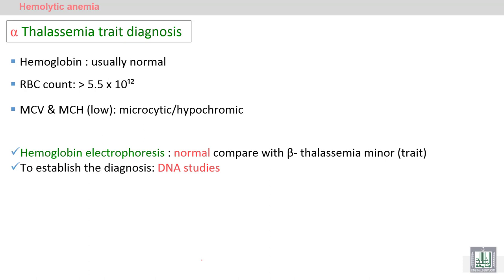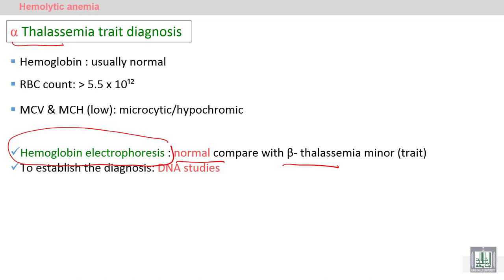For alpha thalassemia trait diagnosis, hemoglobin electrophoresis is a confirmatory test for beta thalassemia trait, but it is not confirmatory for alpha thalassemia trait because the result will be normal. In beta thalassemia, the A2 band is increased, while in alpha thalassemia the hemoglobin electrophoresis is normal.